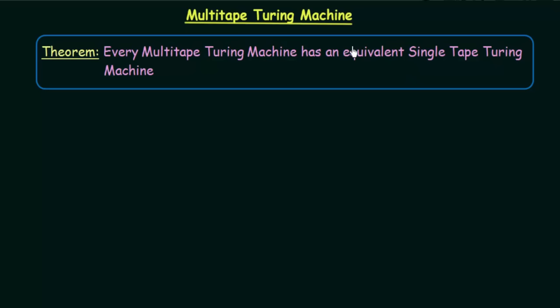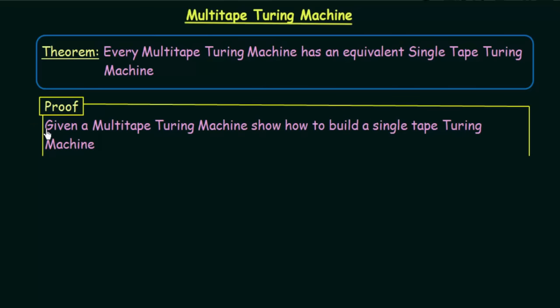What we are going to talk about is its equivalence — that means the single-tape Turing machine is going to be able to perform the same task as a multi-tape Turing machine. In order to prove this theorem, we need to show that given a multi-tape Turing machine, we can build a single-tape Turing machine that recognizes the same language.